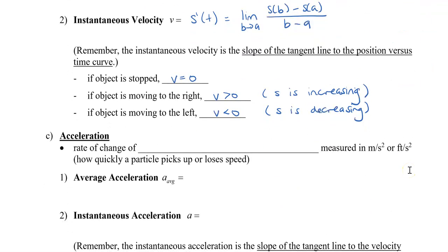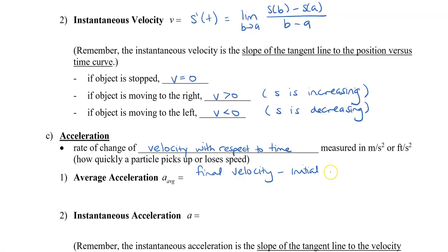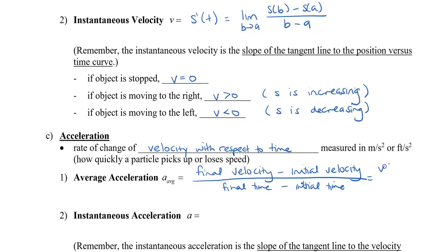Next, we have acceleration. Acceleration is the rate of change of velocity with respect to time, measured in meters per second squared, feet per second squared, or some kind of distance per time squared. Remember that this is how quickly a particle picks up or loses speed. Average acceleration can be calculated by the final velocity minus our initial velocity, all divided by our final time minus our initial time. We can abbreviate this as v of b minus v of a, all divided by b minus a.